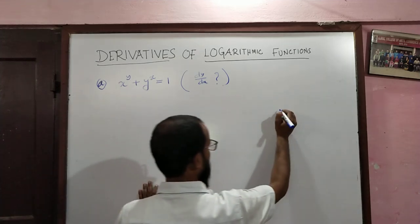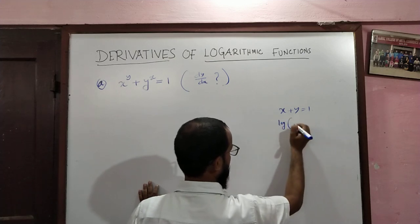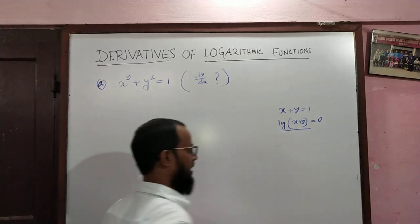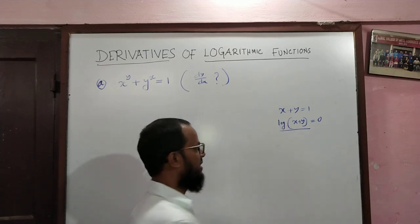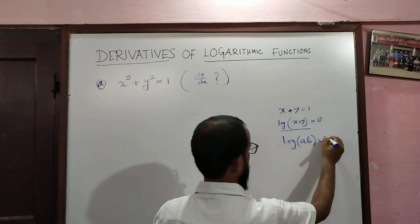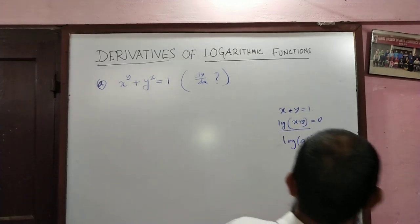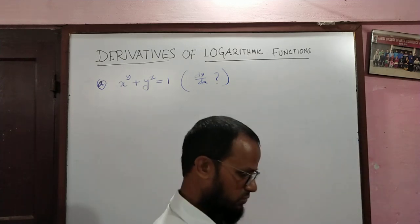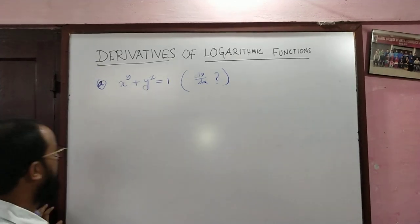Suppose x to the power y plus y to the power x equals 1. In such a type of expression, you cannot take logarithm directly, because log of a sum cannot be expanded. You do not take log from both sides of such a function. If there is a product, then there is no issue, because log(ab) equals log a plus log b. Since the function here is addition, we will find the derivative of each part separately and then use the relation.